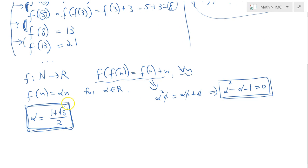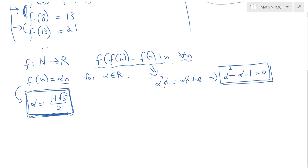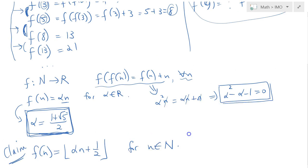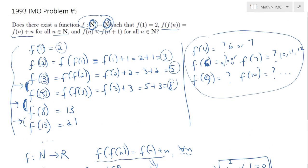So how can I make this function f(n) equals alpha n, where alpha is given like this, into an integer valued function? Well, we can round it to the nearest integer. So I claim that we can look into this function: f(n) equals the floor of alpha n plus one half, so finding the closest integer to it, for all n in integers.